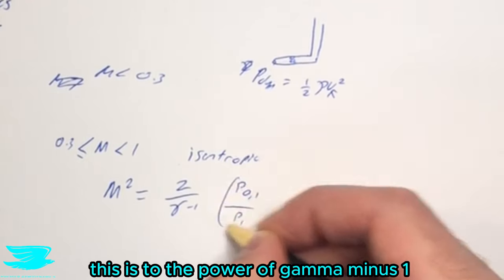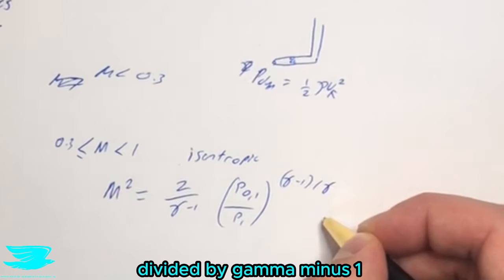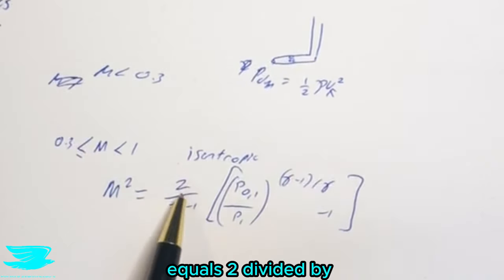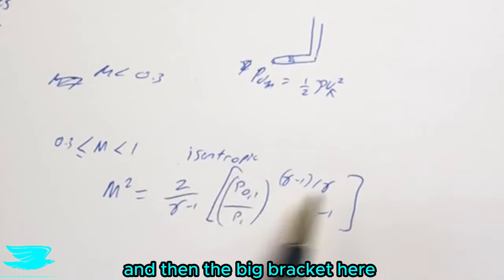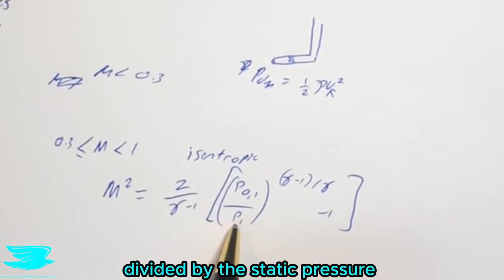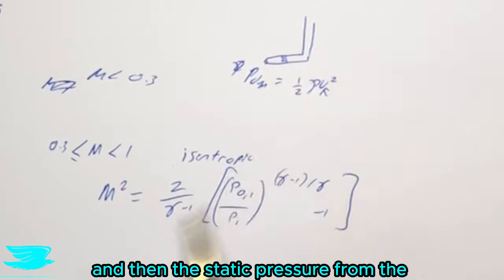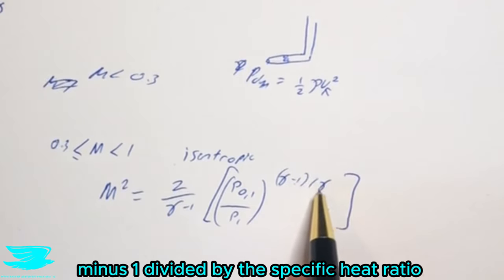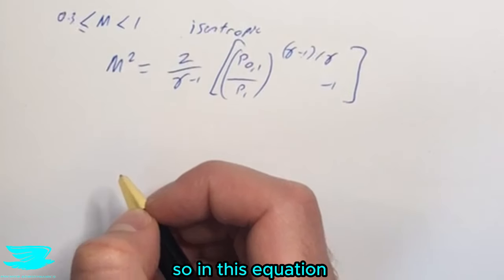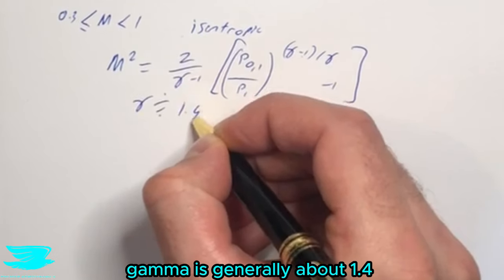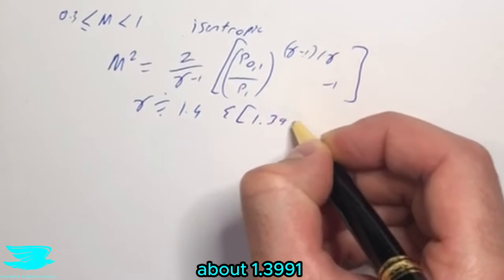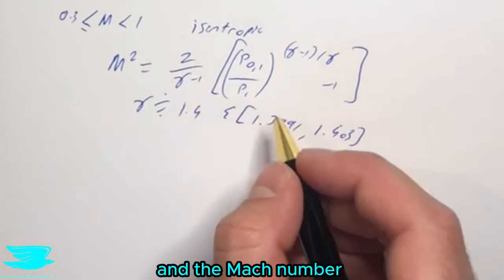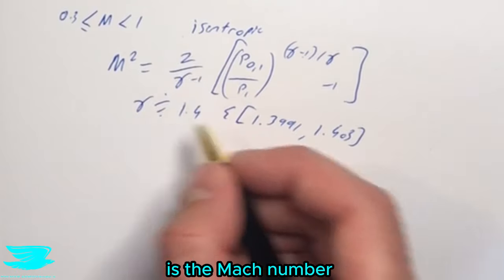The Mach number equation is: M² = (2 / (γ - 1)) × [(p₀₁ / p₁)^((γ-1)/γ) - 1]. In this equation, the Mach number squared equals 2 divided by the specific heat ratio minus 1, multiplied by the total pressure divided by the static pressure — that's the total pressure from the pitot port and the static pressure from the static holes — raised to the power of (γ-1)/γ, minus 1. Gamma is generally about 1.4 for air, ranging between approximately 1.3991 and 1.403 depending on temperature.